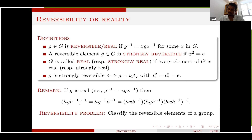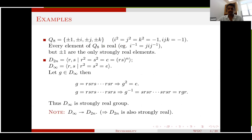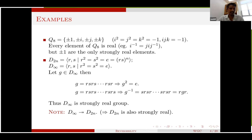As a first example, consider the quaternion group. Every element here is real — that is, conjugate to its inverse — but none are strongly reversible except the central elements, namely plus and minus identity. To be strongly reversible, one needs order-two elements, and the quaternion group lacks enough of those.